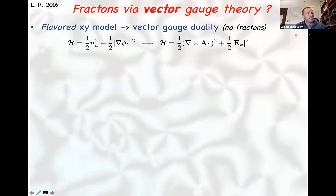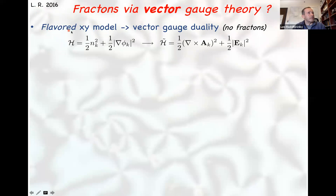Let me review the elasticity to vector gauge theory duality. I want to point out that although Michael Pretko and I developed the tensor gauge theory duality together, this vector gauge theory version was actually what I came up with first — it was more natural to think about vector gauge theories. But I got diverted when Michael Pretko demonstrated that the tensor gauge theories are the ones that exhibit fracton behavior, so my focus shifted to working with him on tensor gauge theories.